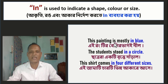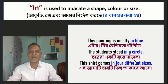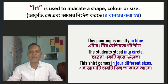Examples: This painting is mostly in blue. The students stood in a circle. This shirt comes in four different sizes. Here, 'in blue', 'in a circle', and 'in four different sizes' all demonstrate this usage.